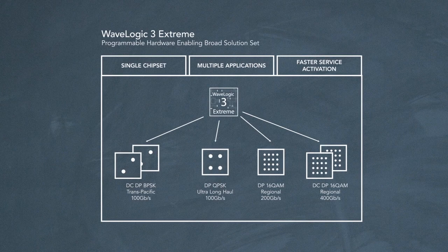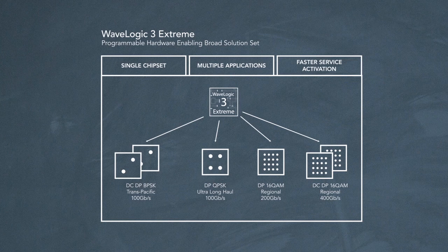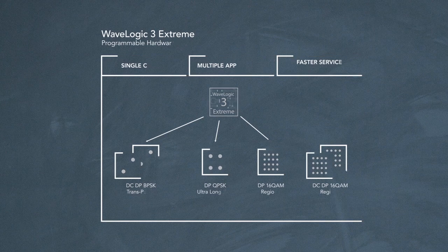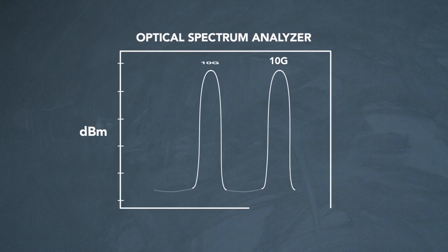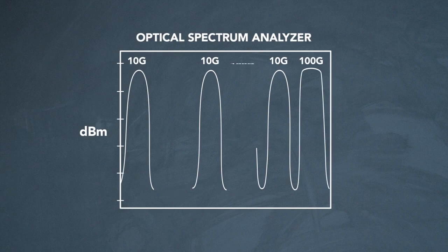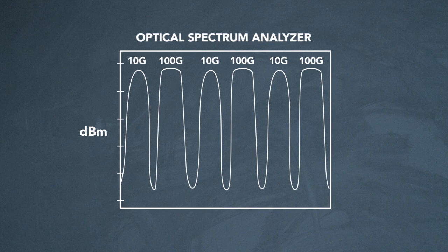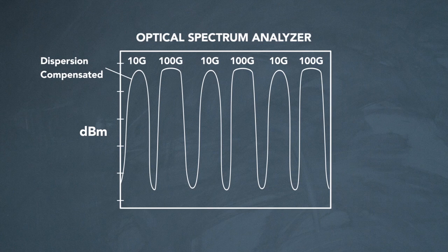From metro all the way to long haul, WaveLogic 3 Xtreme also has new features which enhance our robustness against nonlinear impairments. Well it means that you can add additional 100 gigs to networks that have 10 gig interferers today. These 10 gig networks often have dispersion compensation in them which can cause a lot of nonlinear interactions between different channels.